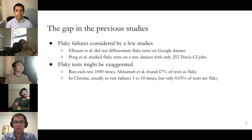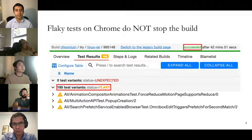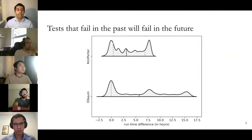In industry, they only rerun a test if it is a failure, and only rerun it three to ten times. Importantly, flaky tests in Chrome do not stop the build — a build with 195 flaky tests can still succeed. So flaky tests do not prevent a build from being integrated. The idea behind most history-based test prioritization algorithms is that tests that fail in the past will fail in the future.